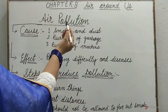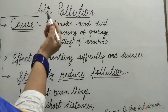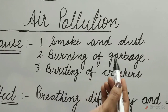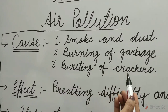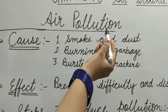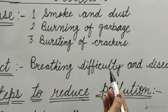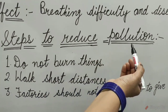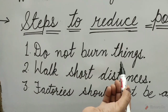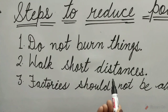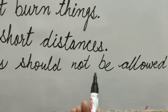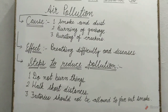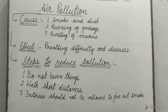Here is a flowchart on air pollution. The causes of air pollution are: 1. Smoke and dust. 2. Burning of garbage. 3. Bursting of crackers. Effects of air pollution: breathing difficulty and diseases. Steps to reduce pollution: 1. Do not burn things. 2. Walk short distances. 3. Factories should not be allowed to give out smoke.